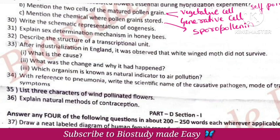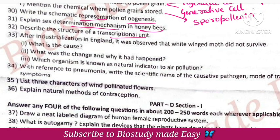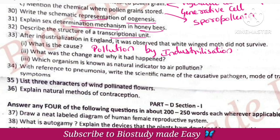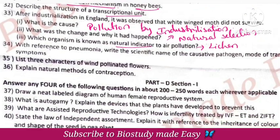Sex determination mechanism of honey bees. Schematic representation of eugenics. Structure of a transcriptional unit. Industrial melanism — pollution is the cause; due to pollution and industry, lichen (light chains) and white predators were affected through natural selection. Lichen is known as the natural indicator of air pollution.